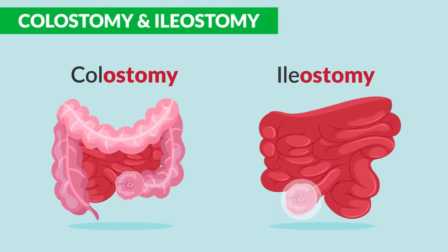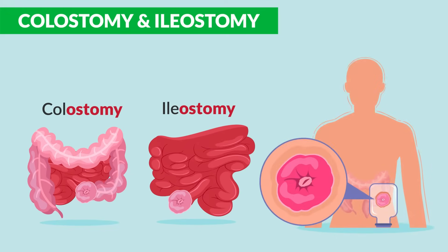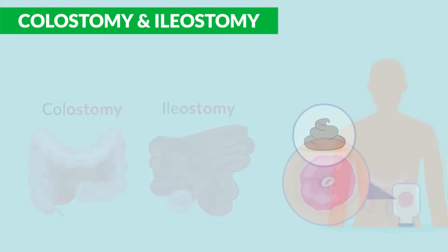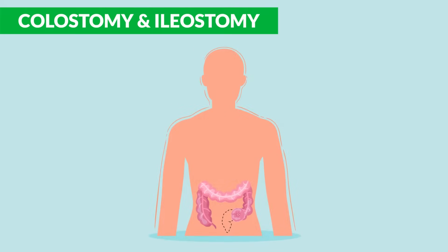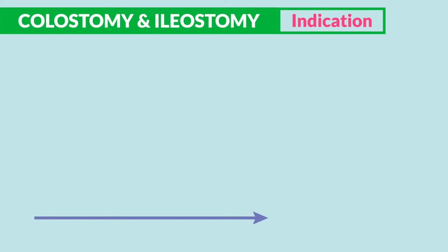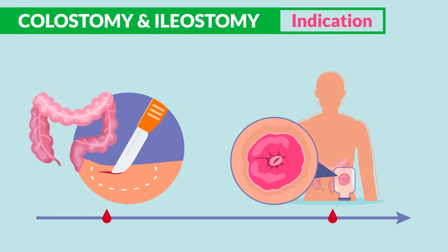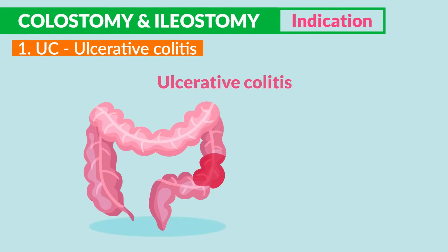Colostomy and ileostomy are two surgical procedures that create an opening in the abdominal wall to allow for passage of stool. This is done to bypass a blockage or a diseased portion of the bowel, or to create a rectum inside the abdomen by cutting the intestines and placing an opening as a stoma on the surface of the abdomen. These procedures are indicated typically after GI surgery and for inflammatory diseases.